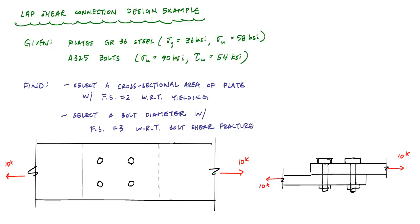What we're trying to do in this lap shear connection is transfer 10 kips from one end to the other end through a lap connection, which is two plates on top of each other connected by bolts. And in this case, I've got four bolts here.